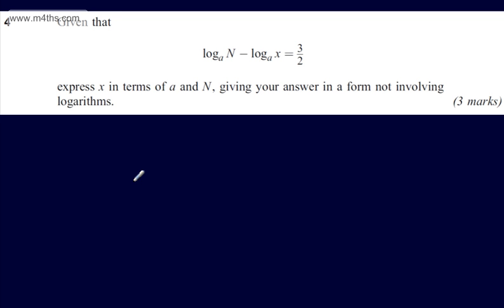This is question number 4. It says given that log to the base a of N minus log to the base a of x is equal to 3 over 2, express x in terms of a and N, giving your answer in a form not involving logarithms. The question carries three marks.